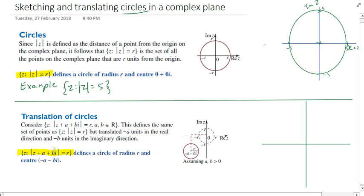Defines a circle of radius R and centre (-A, -Bi). So that just tells you the centre is backwards of where you'd expect it to be.